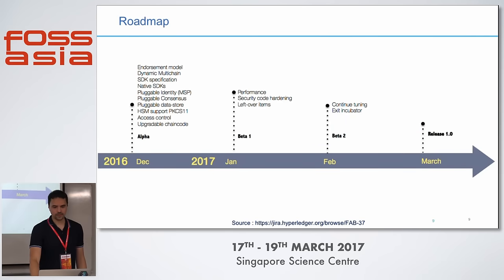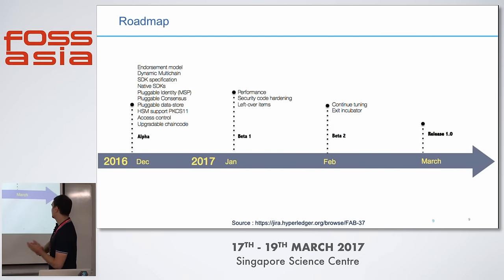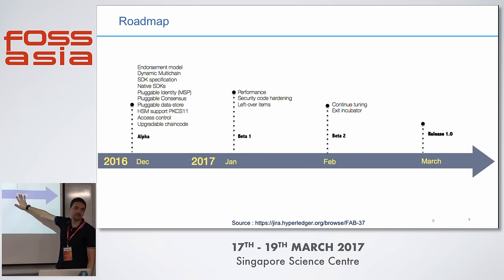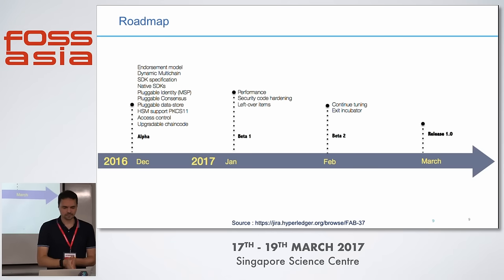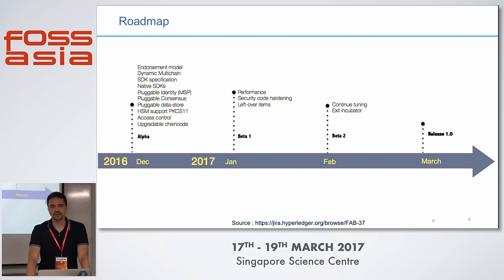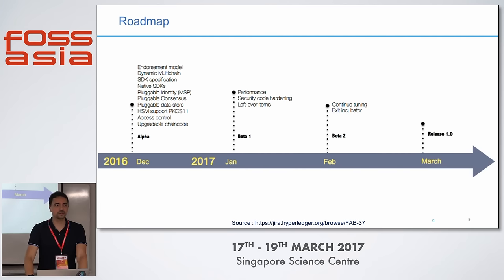The roadmap: we are here in March, and this is the month where version 1.0 is supposed to be released — at the end of this month, actually. There is going to be a huge conference in Las Vegas next week held by IBM, and we expect to have a number of announcements made there.